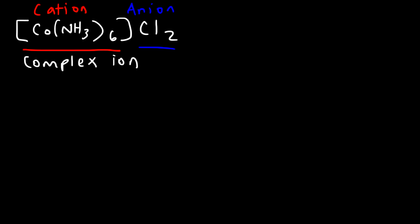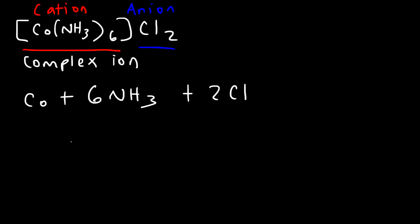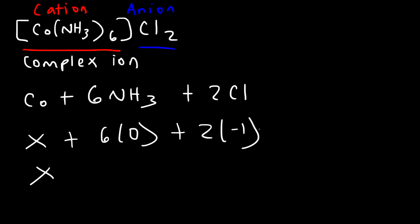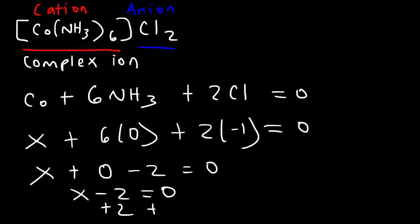One of the first things to do is identify the oxidation state of cobalt. We have cobalt, six ammonia molecules, and two chlorine ions. Replace cobalt with X. NH3 is neutral so it's zero. The oxidation state of chloride is negative one, and the net charge of a coordination compound is always zero. So: X + 6(0) + 2(-1) = 0, giving X minus two equals zero, so X equals two. The oxidation state of cobalt is 2+.